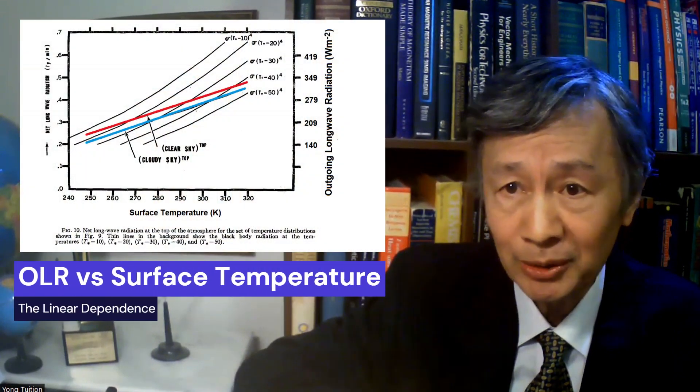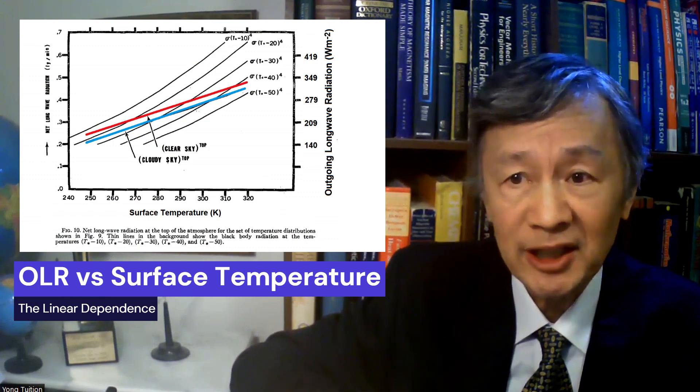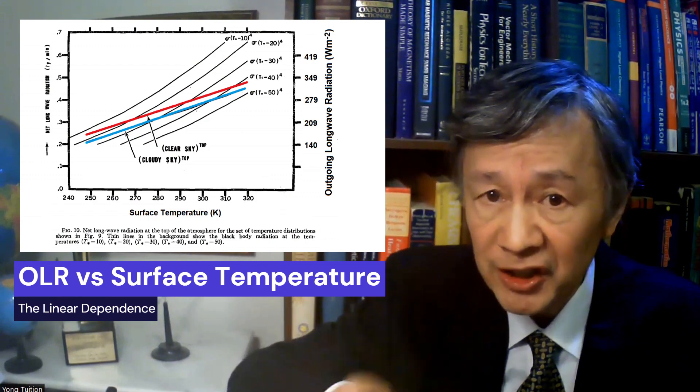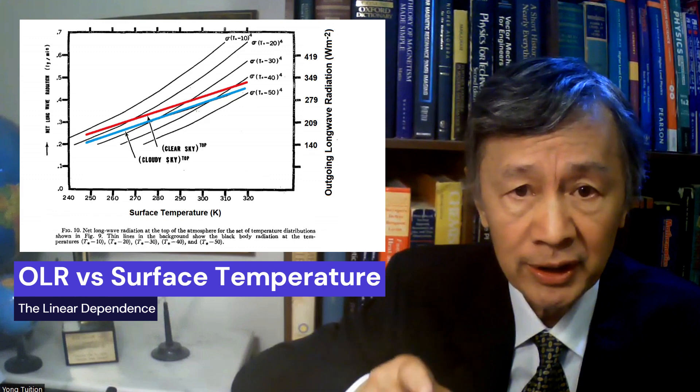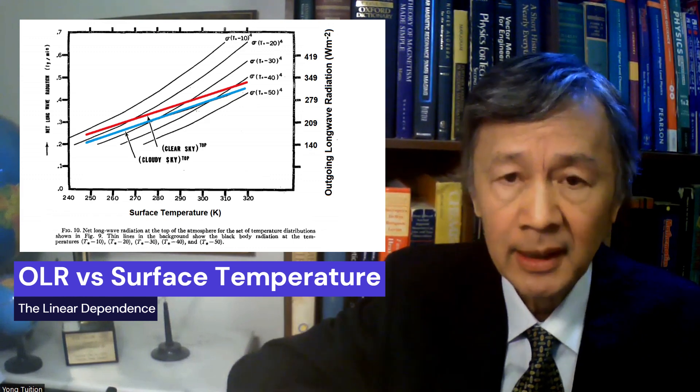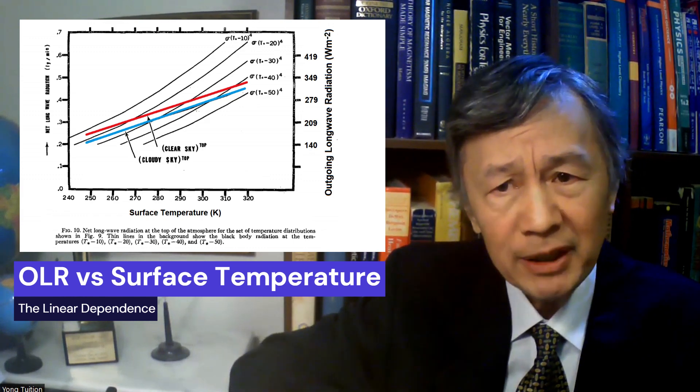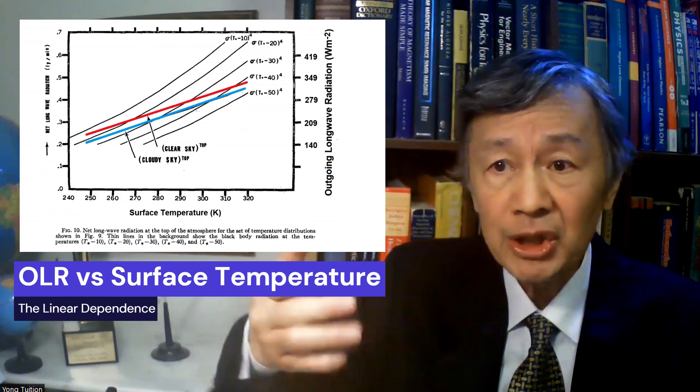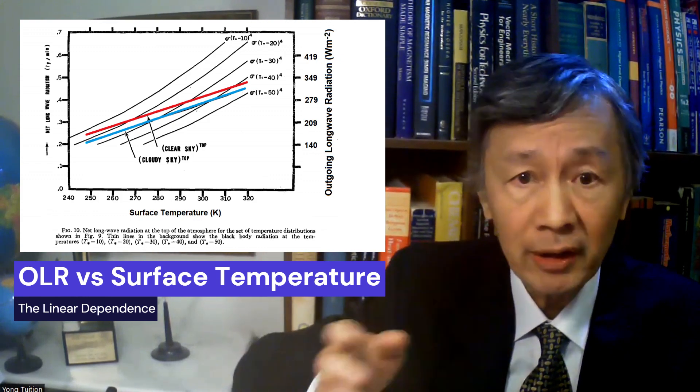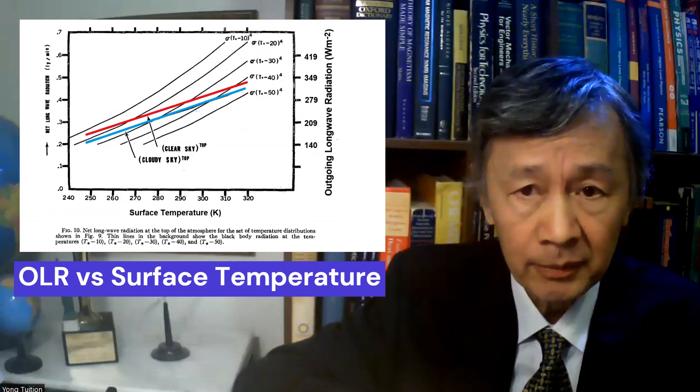climate researchers have been puzzled by the relation between OLR and the surface temperature. For example, Manabe and Wetherald obtained this figure from their climate model in 1967. The slope is 2.36.